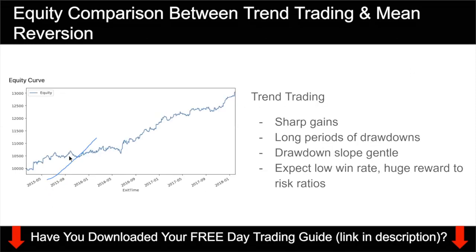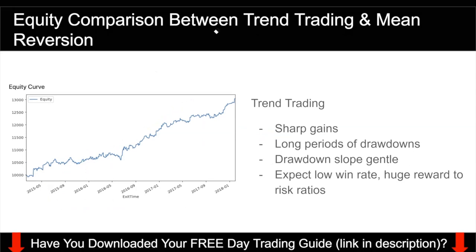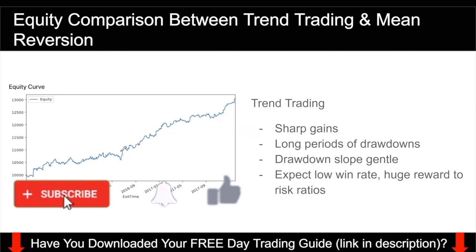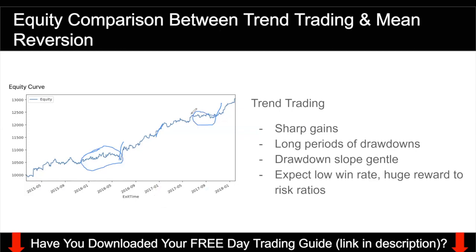The second equity curve is trend trading, which is kind of the opposite. Trend trading is not for everyone because while you do have very sharp gains — whenever you are right, you make a lot of money — for a long period of the time your equity curve will be in long periods of drawdown, because the market only trends about 20% of the time. That means 80% of the time you'll be taking small losses. Your account will be ranging — making small wins and losses here and there — but you don't make much money. When you get it right in a trending market, though, you're going to make a lot of money.